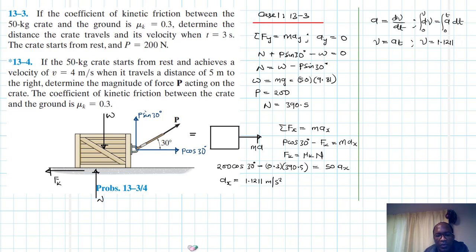So v therefore at t equal to 3 seconds is just going to be equal to 1.1211 times 3. Therefore v at t equal to 3 seconds is just going to be equal to 3.36 meters per second. We are also being asked to find the distance.